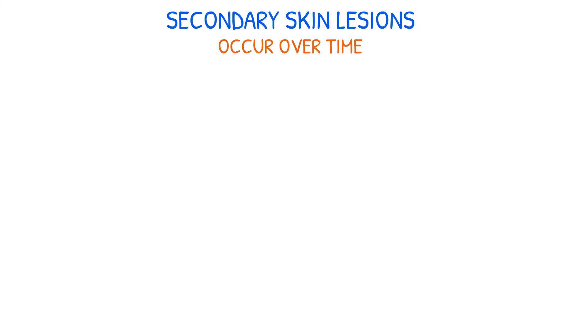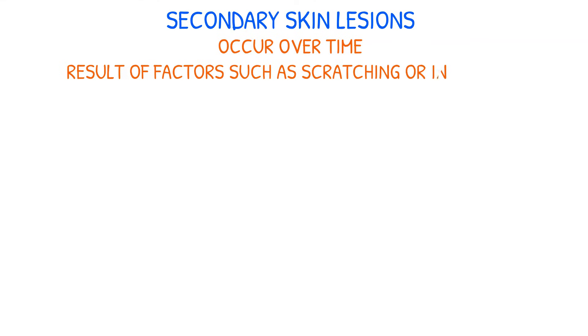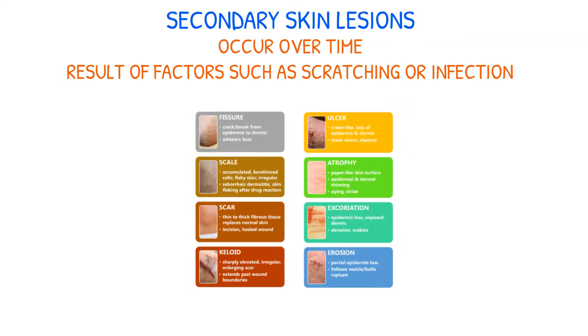Secondary skin lesions are changes to the skin that occur over time or as a result of factors such as scratching or infection. They can have a variety of causes and can range from mild to severe. Here are some of the most common secondary skin lesions.